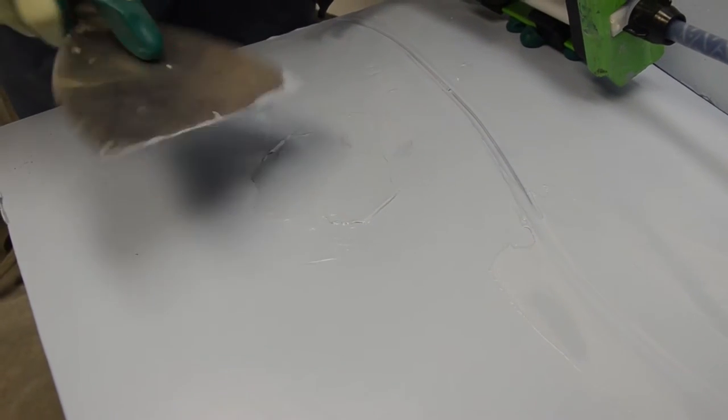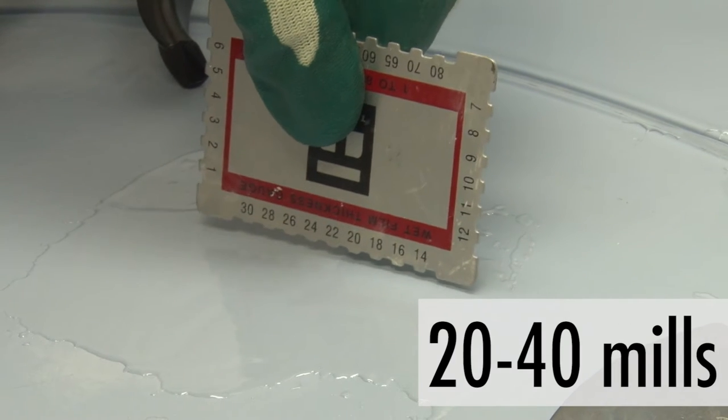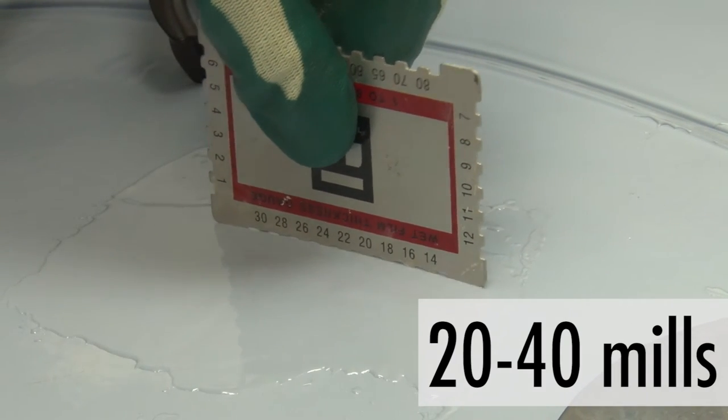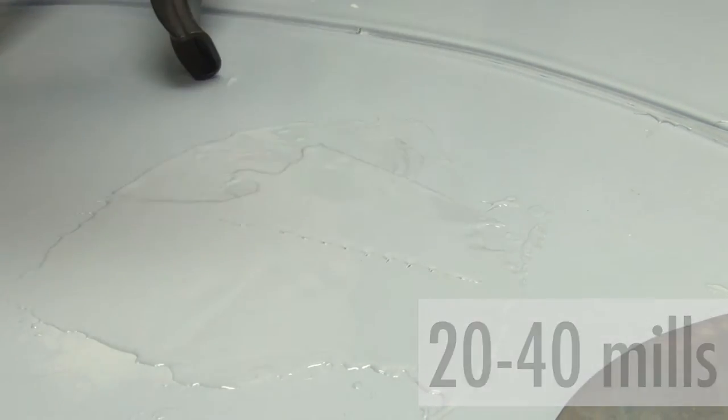The desired wet film thickness should be between 20 to 40 mils. In this case, 28 mils was applied.